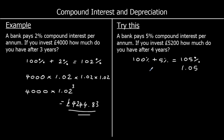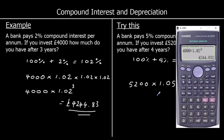So we've got £5,200. To work out how much we've got at the end of the year, multiply by 1.05. Then for the second year, multiply by 1.05 again; the third year, 1.05 again; and the fourth year, 1.05 again. So we're going to multiply by 1.05 to the power of 4. So 5,200 times 1.05 to the power of 4.